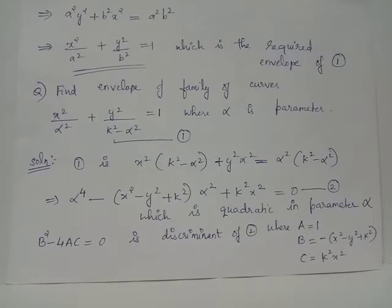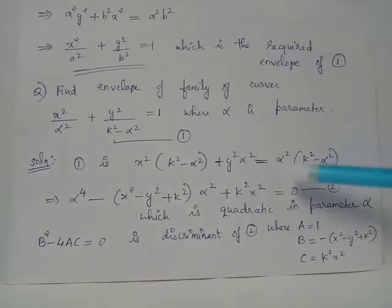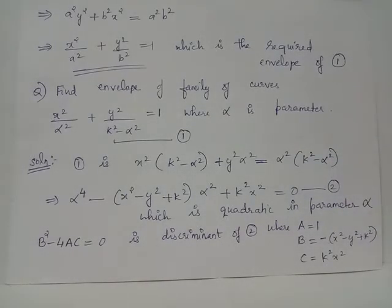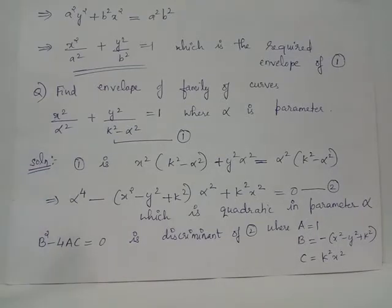In the LHS, we will group terms containing α² and we have minus of (x² - y² + k²) multiplied by α² obtained. We have α² multiplied by this α², which along with the negative sign when brought to the LHS becomes positive α⁴, written here.